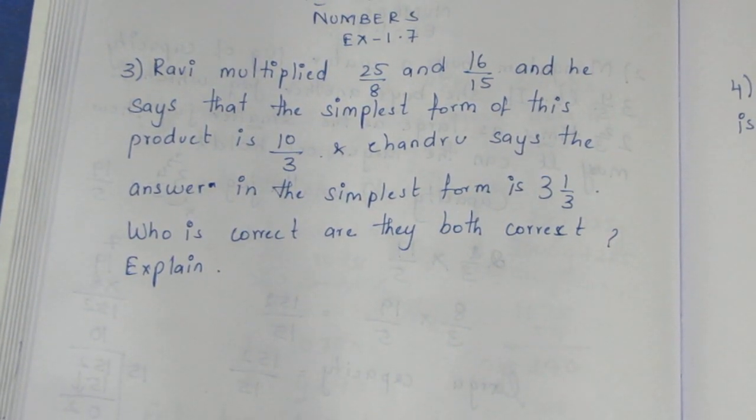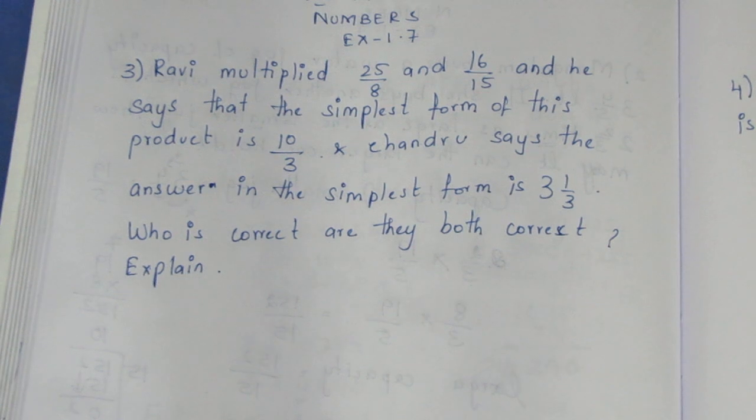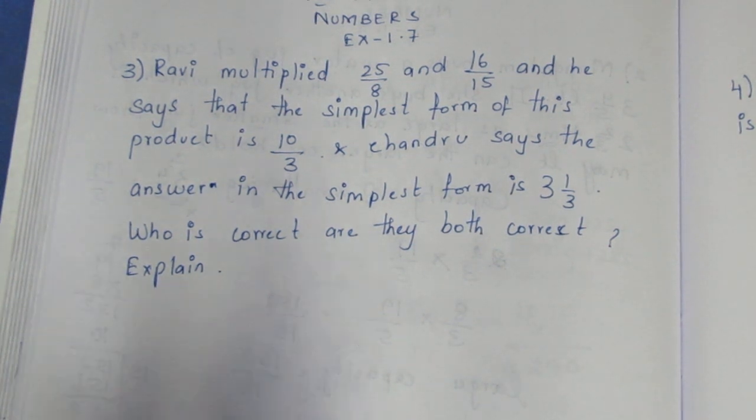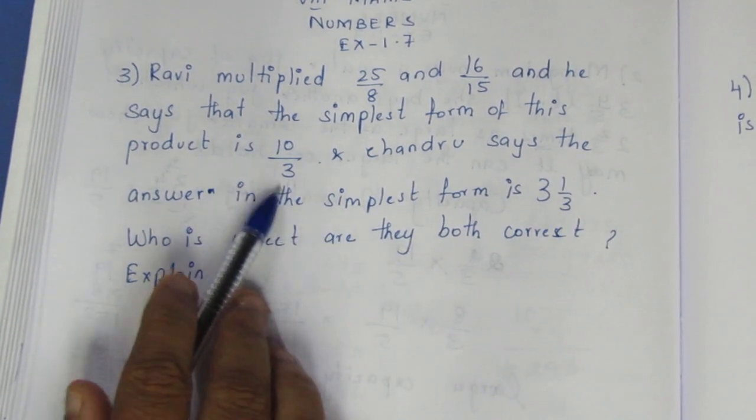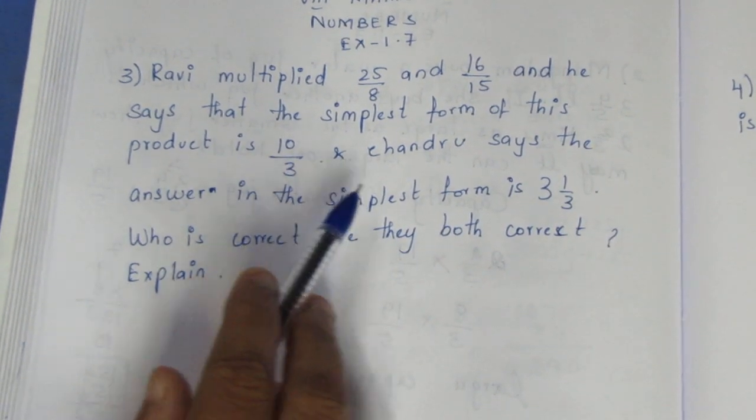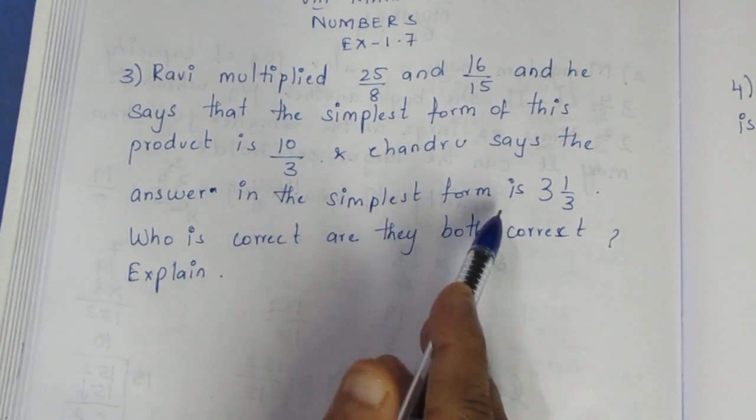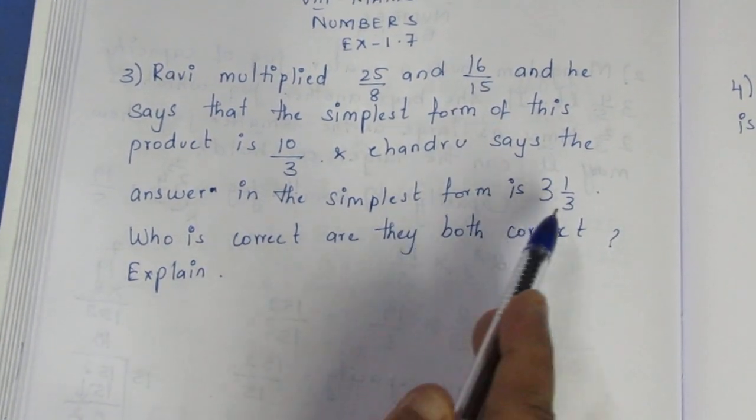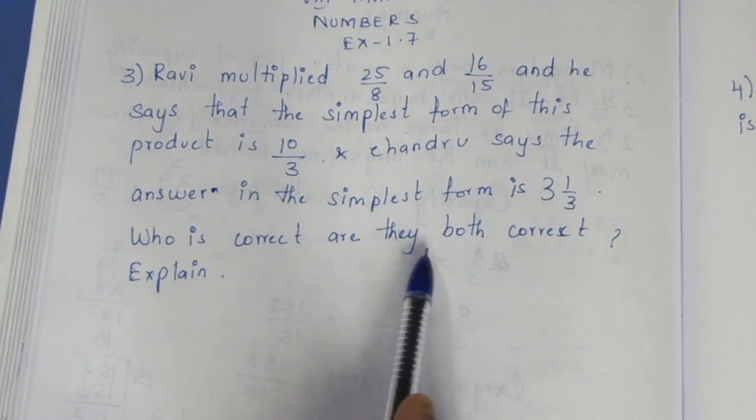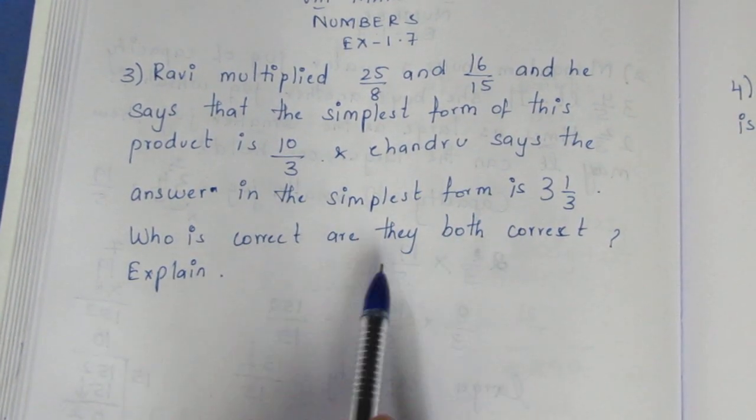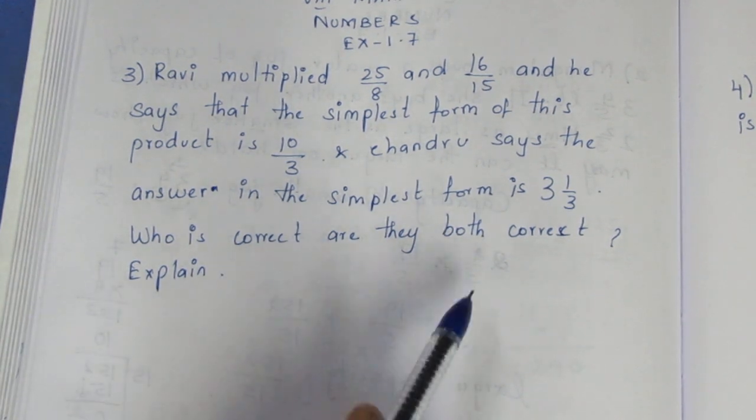Ravi multiplied 25 by 8 and 16 by 15, and he says that the simplest form of this product is 10 by 3. Chandru says the answer in the simplest form is 3 and 1 by 3. Who is correct? Are they both correct?